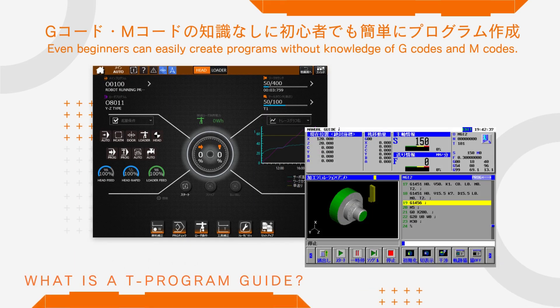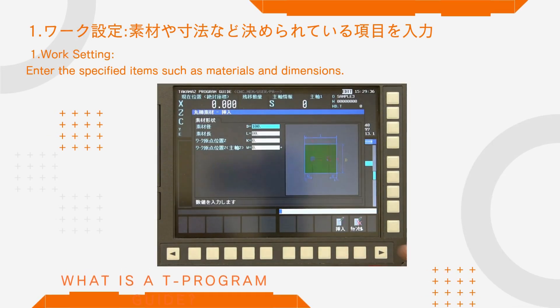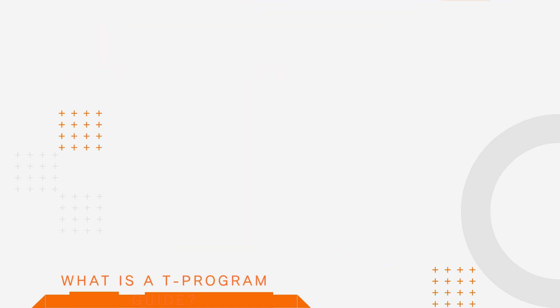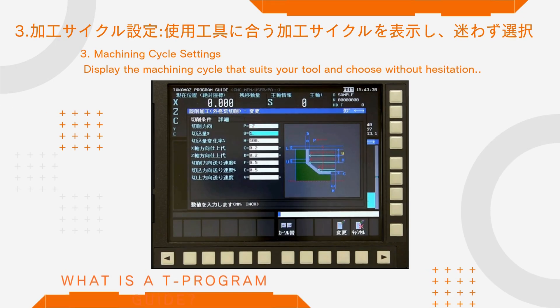Even beginners can easily create programs without knowledge of G-codes and M-codes. Enter the specified items such as materials and dimensions. Cutting conditions are automatically determined based on the selected tool and workpiece material. The machining cycle that suits your tool is displayed so you can choose without hesitation.